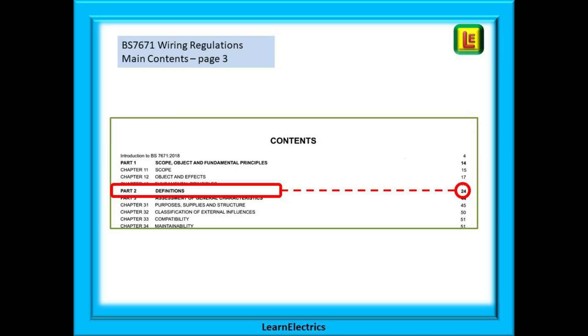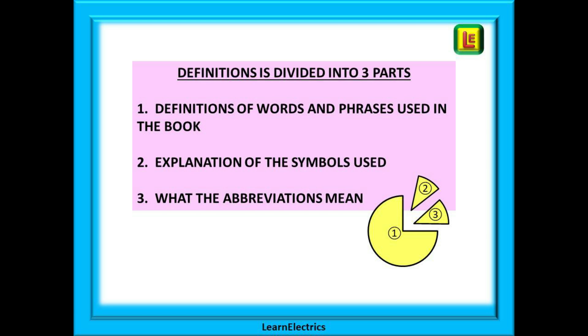We can start by visiting our go-to page in the wiring regulations, that is page three for the main contents page. Scanning down the page we quickly find part two definitions near the top indicating page 24. If we find page 24, we come to the beginning of part two and there are three sections to definitions.